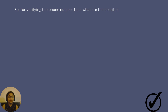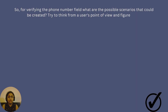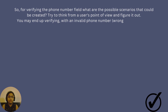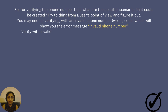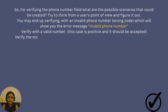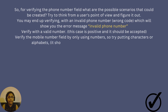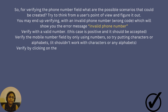For verifying the phone number field, what are the possible scenarios that could be created? Try to think from a user's point of view and figure it out. You may end up verifying with an invalid phone number — that is, wrong code — which will show you an error message saying 'Invalid phone number.' Verifying with a valid number is the positive case and it should be accepted. Next, verify the mobile number field by only using numbers; try putting characters or alphabets — it shouldn't work.